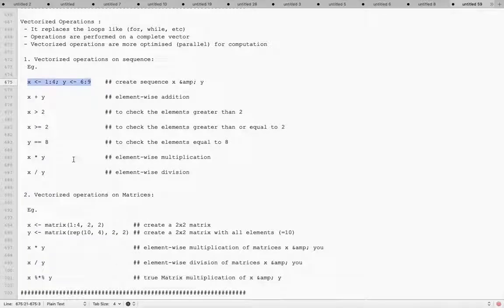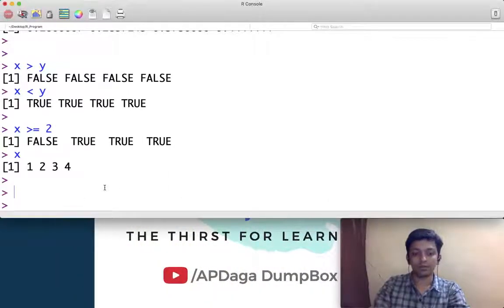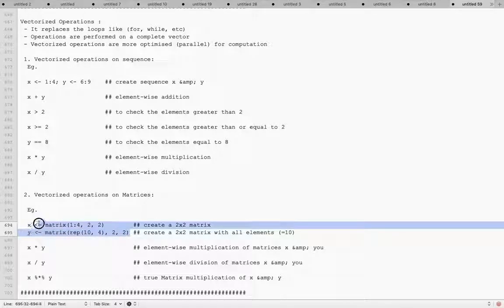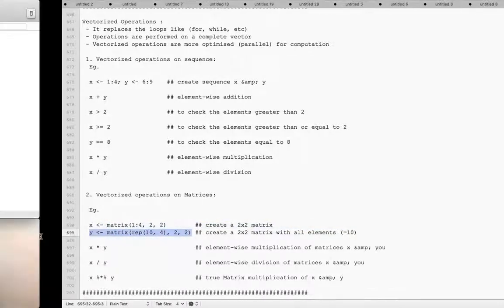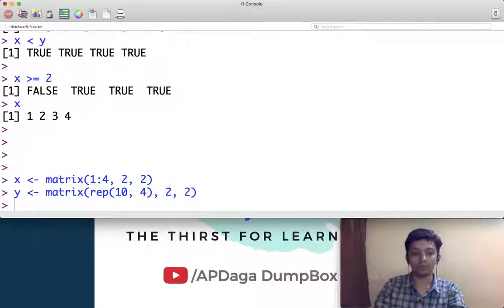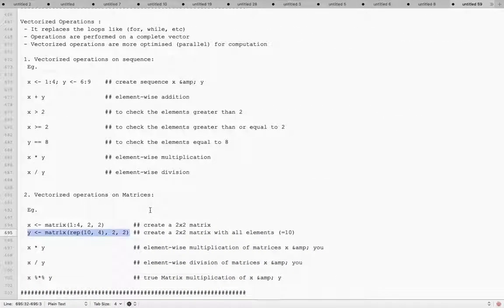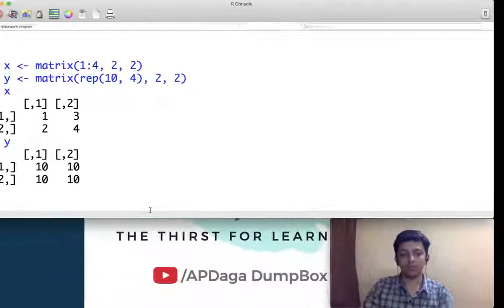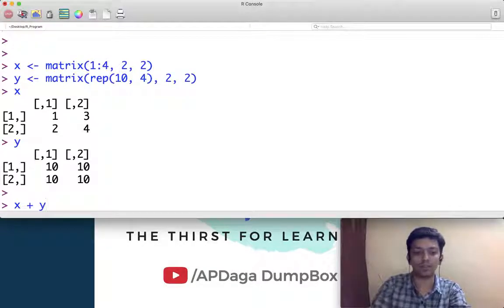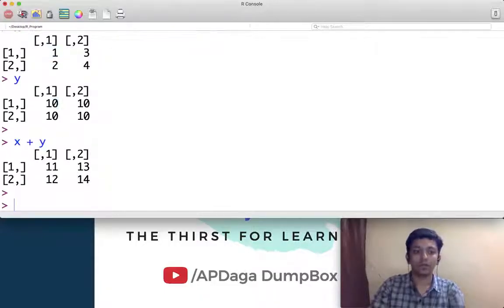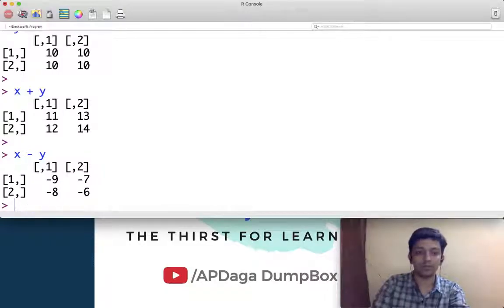Now let us see how to apply vectorized operation on matrices. So I am creating one matrix x, then another matrix y. Both matrices are 2 by 2. I am printing x, I am printing y. Now just like vectors, I can do the same operation on matrix as well. If I am doing x plus y it is element-wise addition, first element is getting added with the first element. If I am doing subtraction, same.